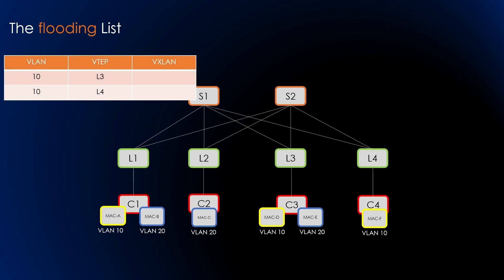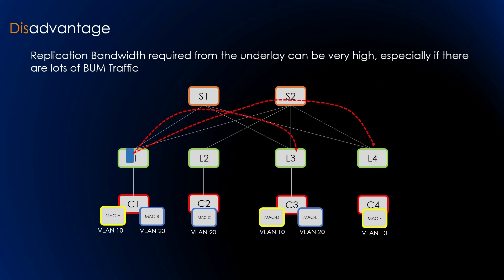The flooding list or replication list is built with the help of route type 3, advertised based on the same broadcast domain. For example, L1 is part of VLAN 10, L3 is part of VLAN 10, and L4 is part of VLAN 10 — so L1 will send the IMET route to L3 and L4 in the same broadcast domain. The replication list is automatically built using route type 3, making the solution more robust as BGP route type 3 performs auto discovery. The disadvantage is that replication bandwidth from the underlay can be high, especially if there are many BUM packets.